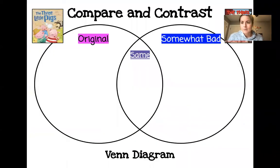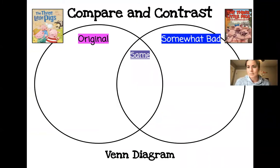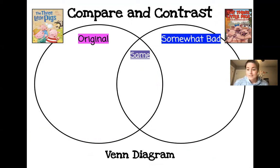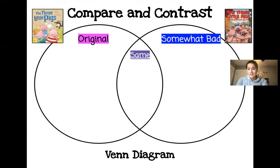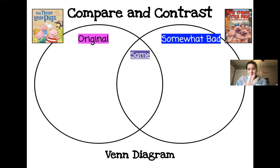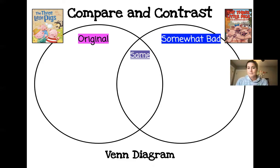Today I wanted to talk about — can you see it all? Maybe you can see both the books there. Do you remember, right before spring break, we read the story of the Three Little Pigs? And I have that on the left side. So these two big circles are called a Venn diagram — with a V. This helps us figure out what's different and what's the same.